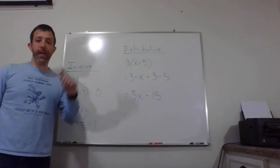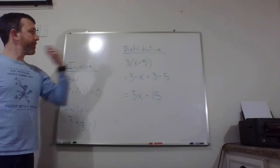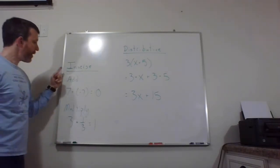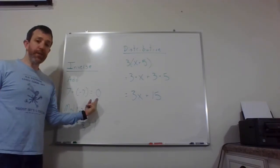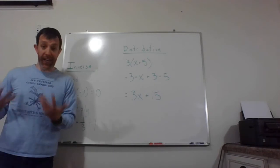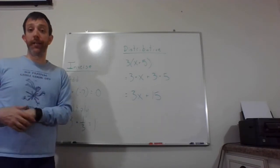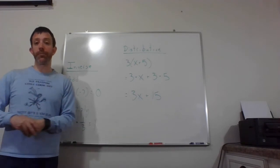So here we have our last two properties. We have the inverse property and then the distributive property. So the inverse property takes you back to zero for addition and back to one for multiplication. Back to those identities that we actually had on the identity property, right? Zero was the additive identity. One was the multiplicative identity.